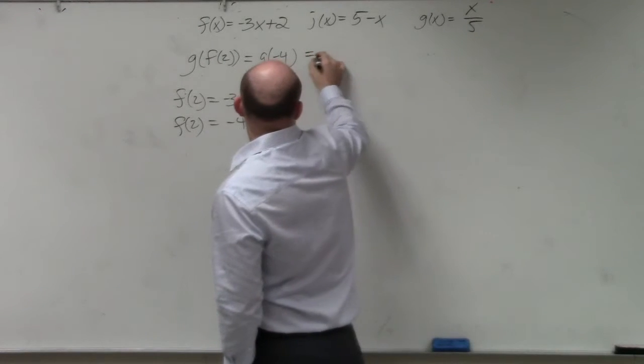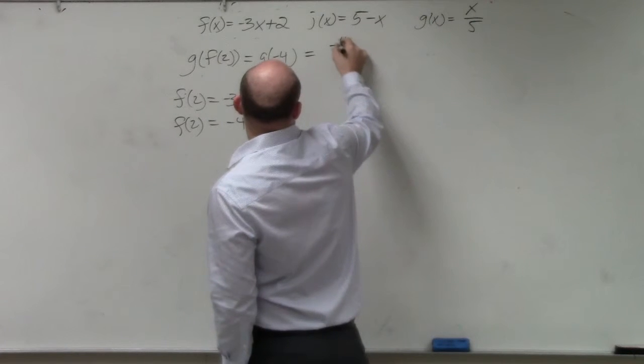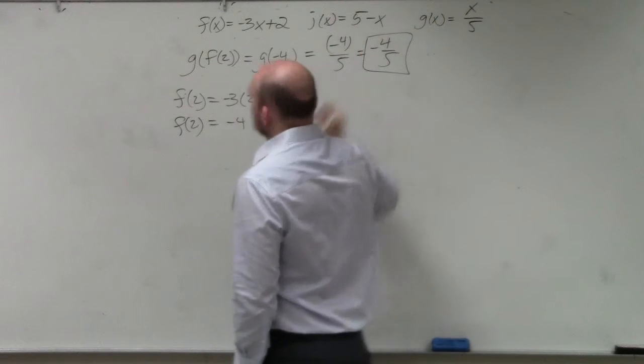So now the g function, g of negative 4 is just negative 4 over 5, which is negative 4 fifths. Done.